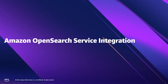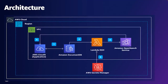Now I'll have Karthik take over for the demo and architecture slides. Thank you, Saurav, for explaining Amazon DocumentDB and the Lambda ESM. I'll be talking about Amazon DocumentDB and OpenSearch integration. With this integration, you can run full-text queries, fuzzy logic queries, and semantic search queries on Amazon DocumentDB data that is streamed to OpenSearch in real time.